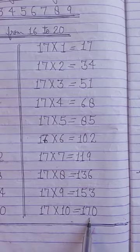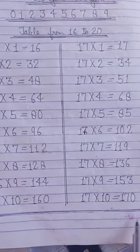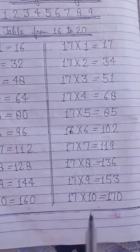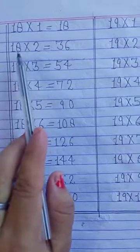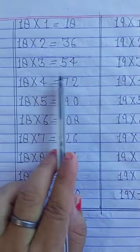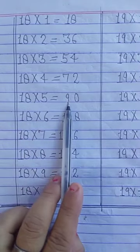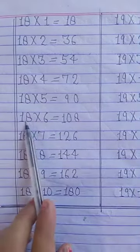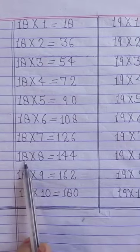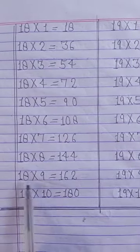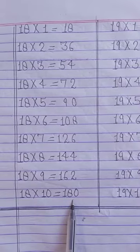17 tens are 170. Now after table of 16 and 17 you draw your line with the help of scale. Now after 17 you write table of 18. 18 ones are 18. 18 twos are 36. 18 threes are 54. 18 fours are 72. 18 fives are 90. 18 sixes are 108. 18 sevens are 126. 18 eights are 144. 18 nines are 162. 18 tens are 180.